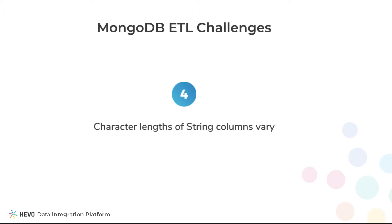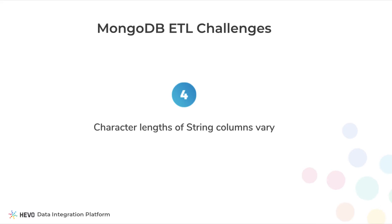MongoDB doesn't put a limit on the length of string columns — it has a limit of 16 megabytes on the size of the entire document. However, in Redshift, it is common practice to restrict string columns to a certain maximum length for better space utilization. Hence, each time you encounter a longer value than expected, you will have to resize the column in Redshift.